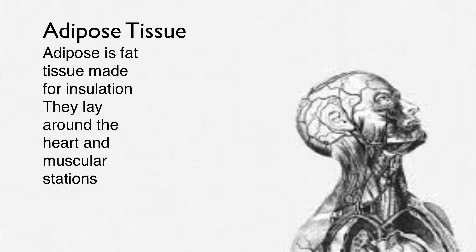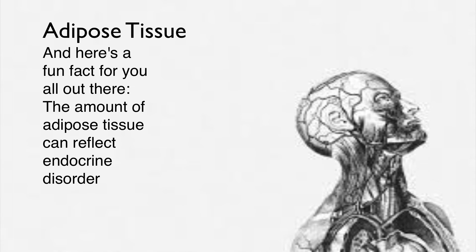Adipose is fat tissue made for insulation. It lays around the heart and muscular stations. The amount of adipose tissue can reflect climate adaptation.